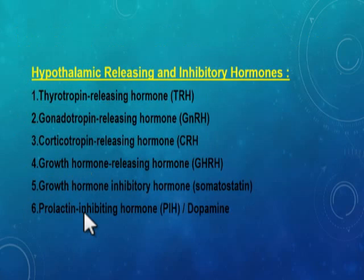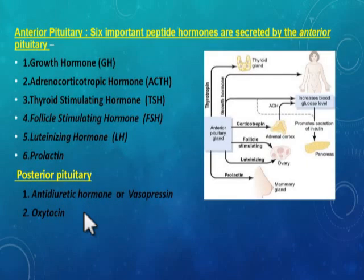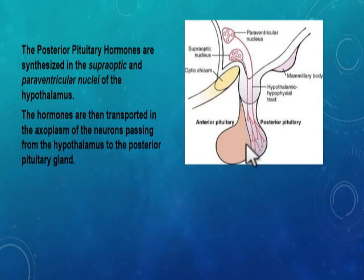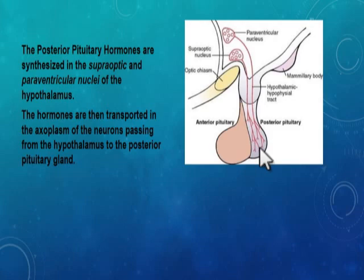To summarize: six hormones come from the hypothalamus, six hormones come from the anterior pituitary, and two hormones come from the posterior pituitary. The posterior pituitary hormones are synthesized in the supraoptic and paraventricular nuclei of the hypothalamus, transported in the axoplasm of neurons to the posterior pituitary, stored in the axon terminals, and released into the circulation when the hypothalamus is stimulated.